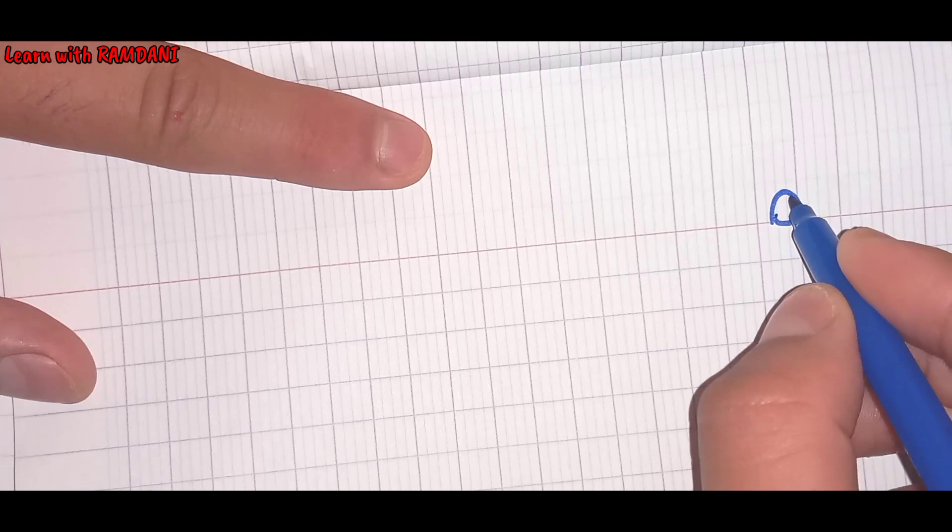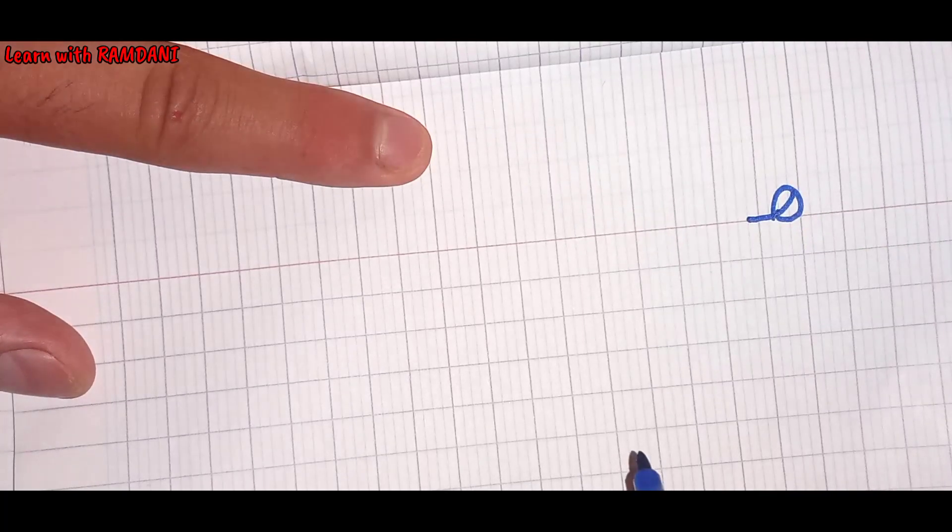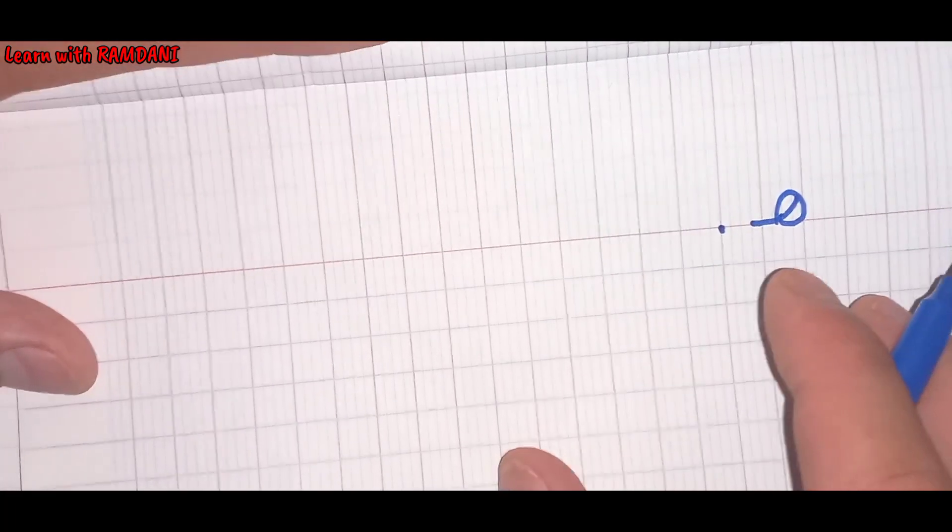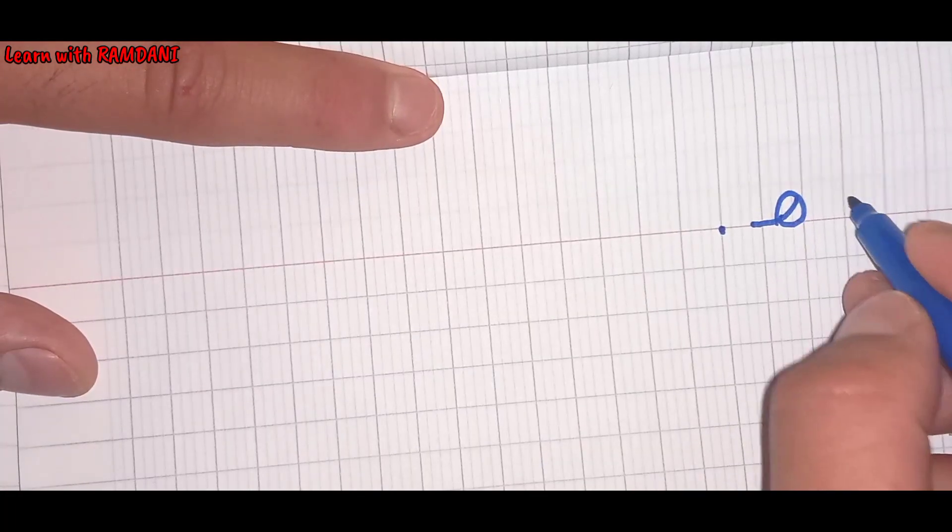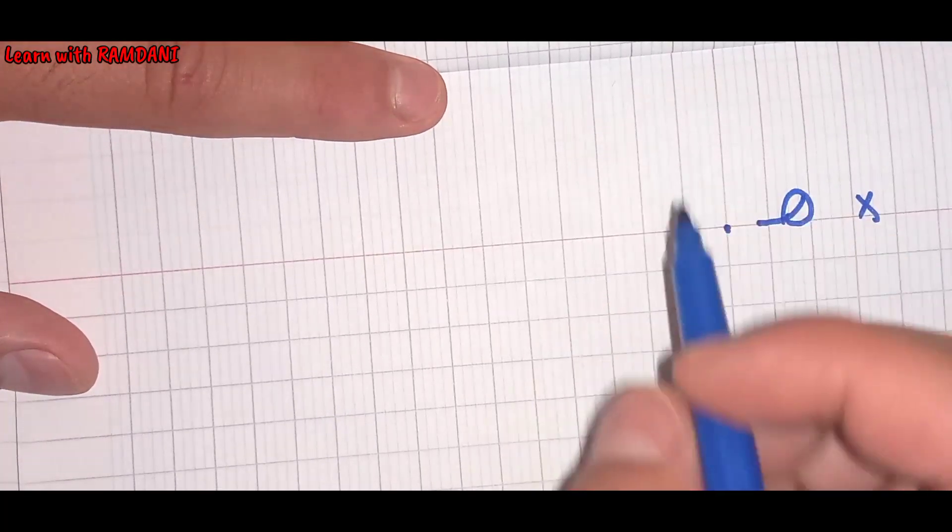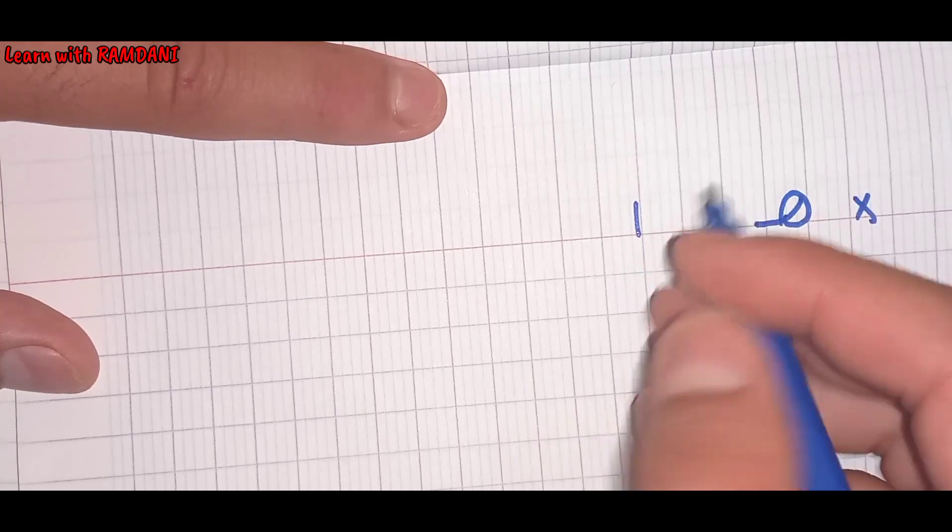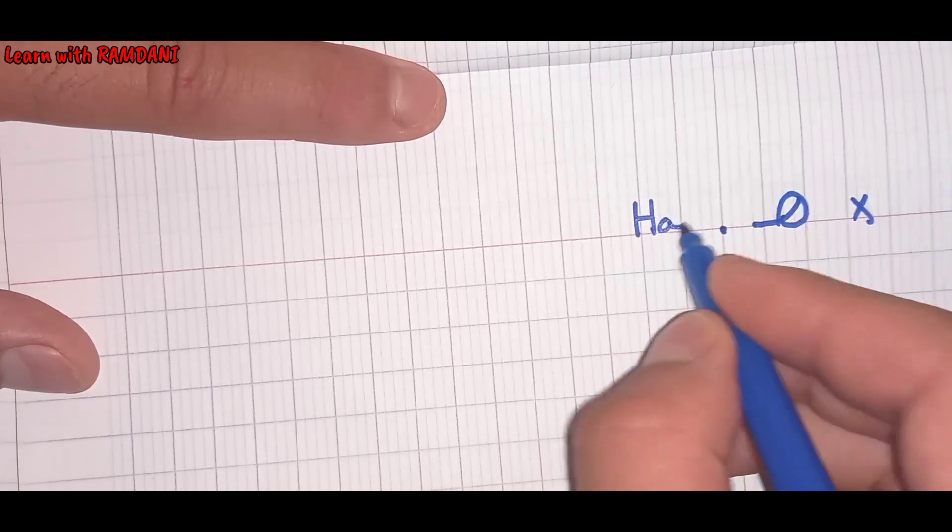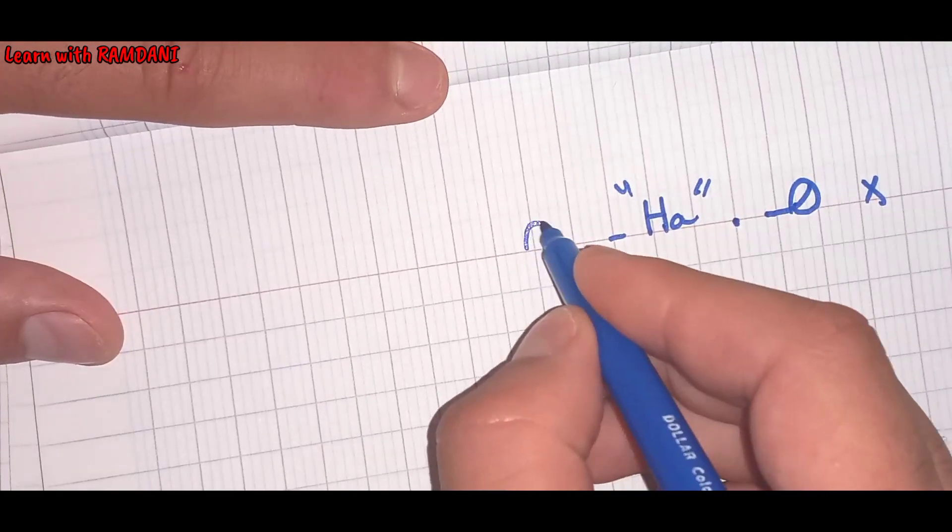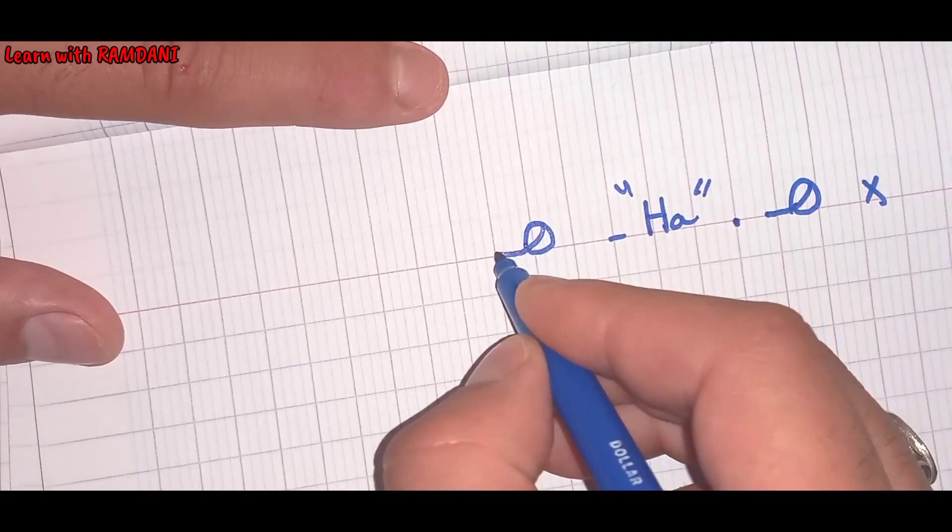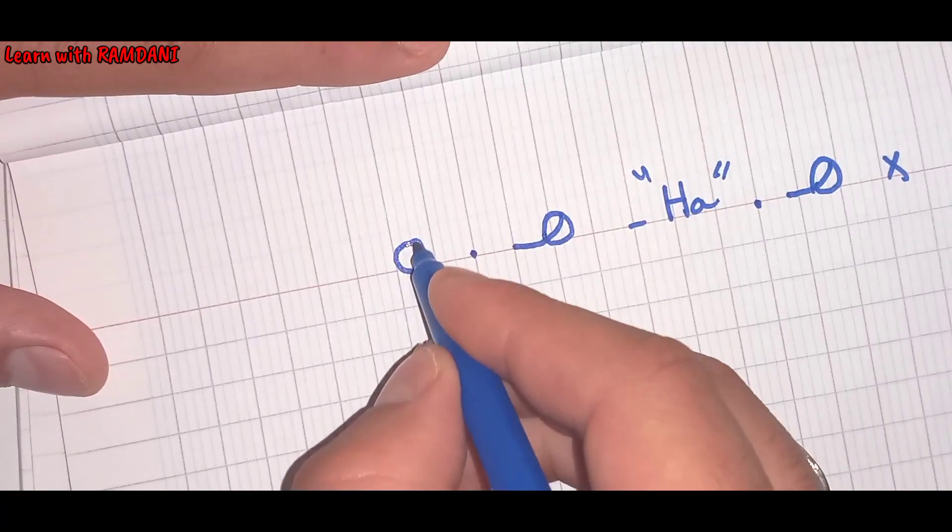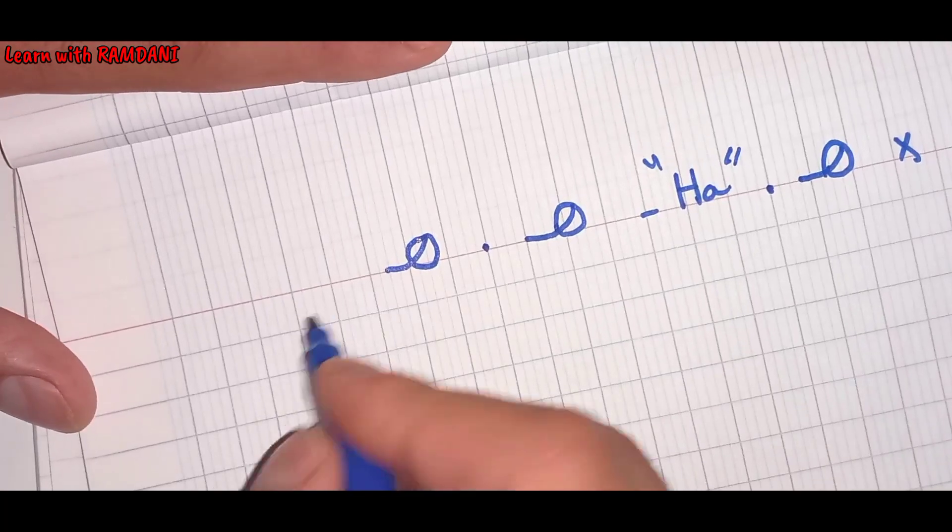A circle, the line here. There is no equivalent letter to it in English, but we refer to it by Ha. A circle and like this, one more time.